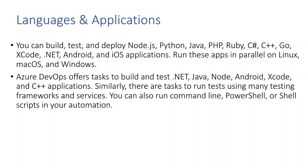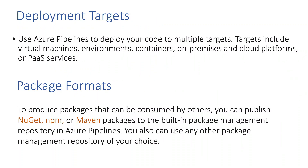What are the languages and applications that are supported? You can build, test, and deploy Node.js, Python, Java, PHP, Ruby, C#, and many other languages supported in Azure Pipelines. You can run all these apps in parallel on Linux, macOS, or Windows. Azure DevOps offers tasks to build and test — there will be an option called 'task' in your Azure Pipelines which will help you to build and test. We'll see all those in our upcoming sessions.